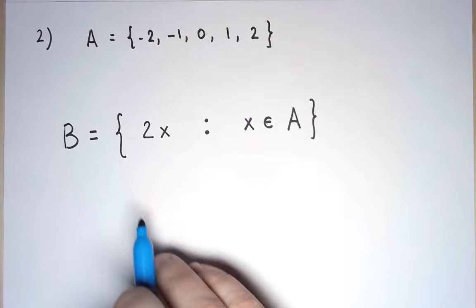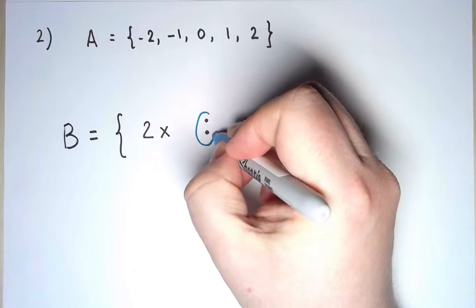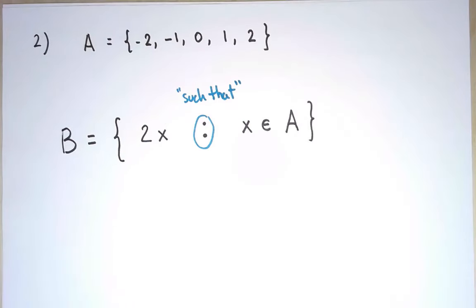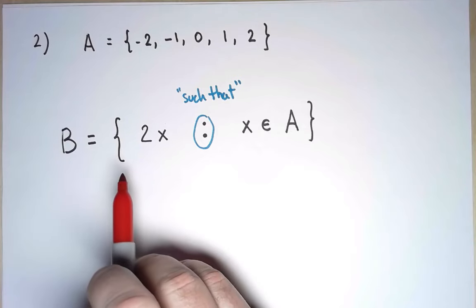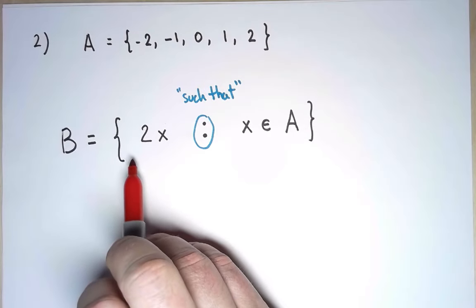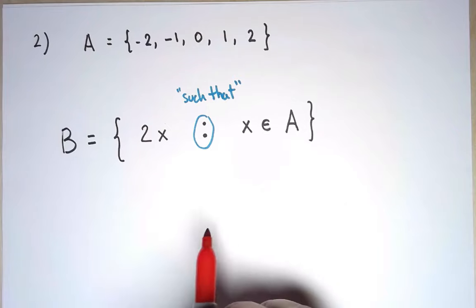Like before, in the middle, I'm using this colon to mean 'such that.' But now the things on the left and on the right are different. On the left, I am saying which form the elements of B have, and on the right I'm explaining the notation I used on the left.